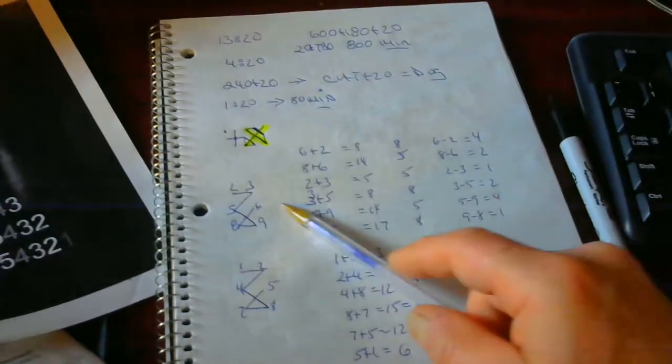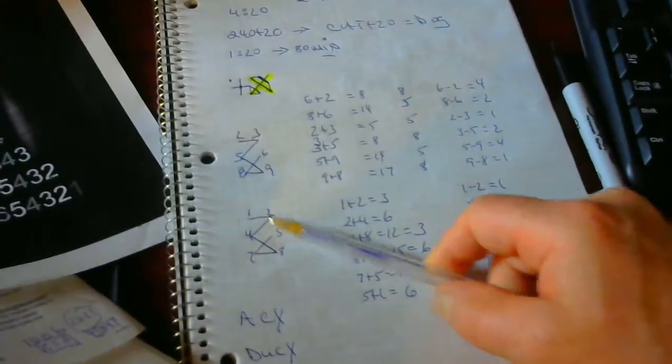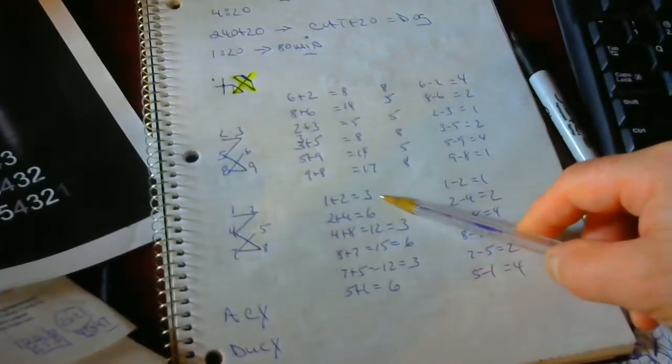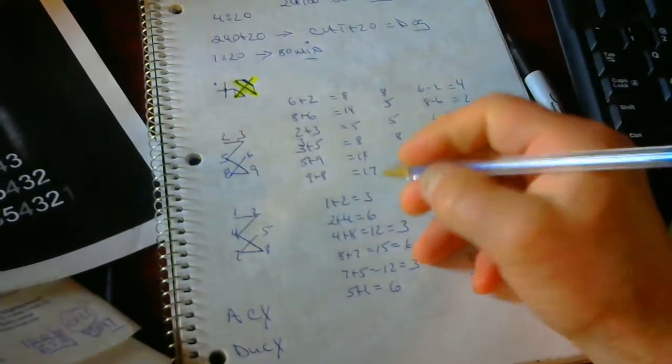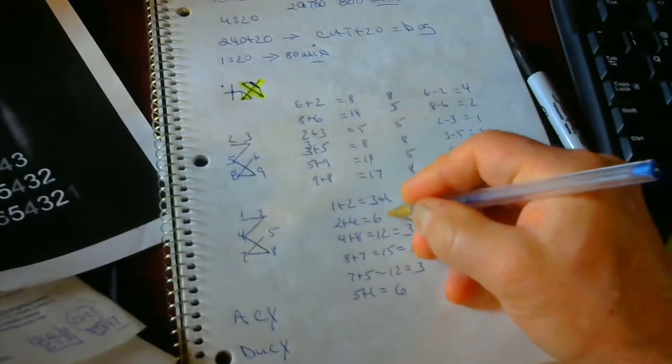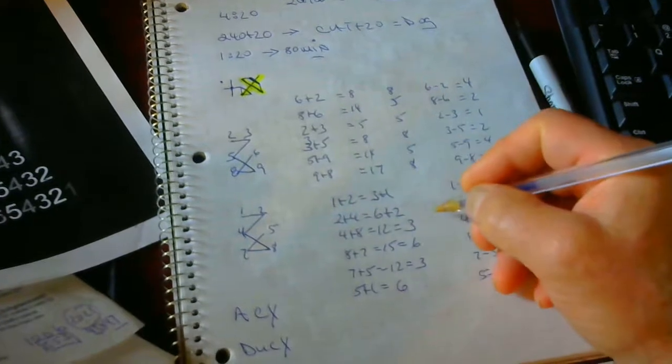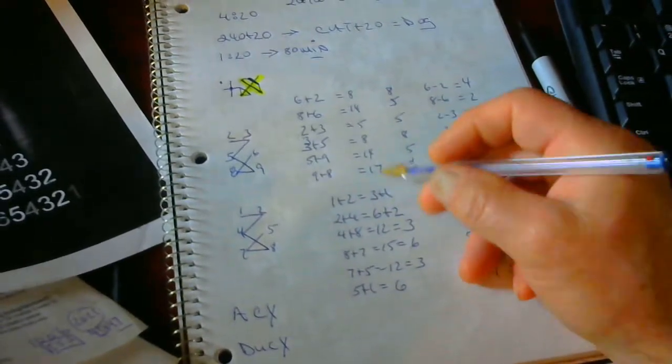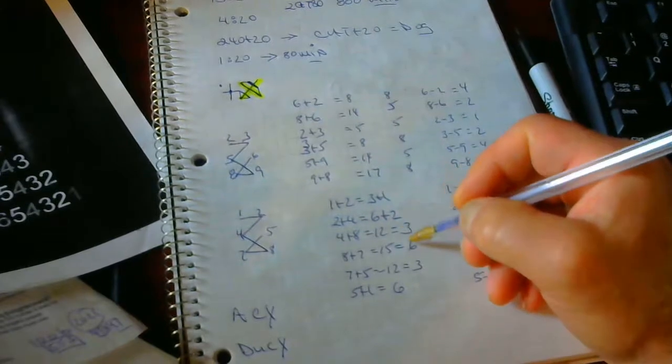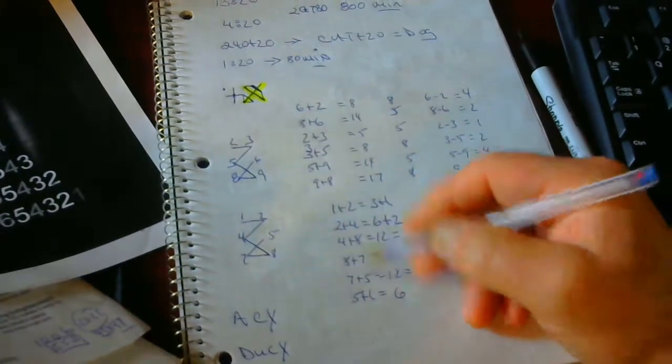So now what I want to do is when we connect these numbers, when you're connecting these numbers over here, 1 plus 2 equals 3. 3 minus 2 equals 1. Minus 2, this one over here equals 2. 3, 1, 6, 2. It doubles up. And it becomes 3, 6, 3, 6, 3, 6. That's this rotation.